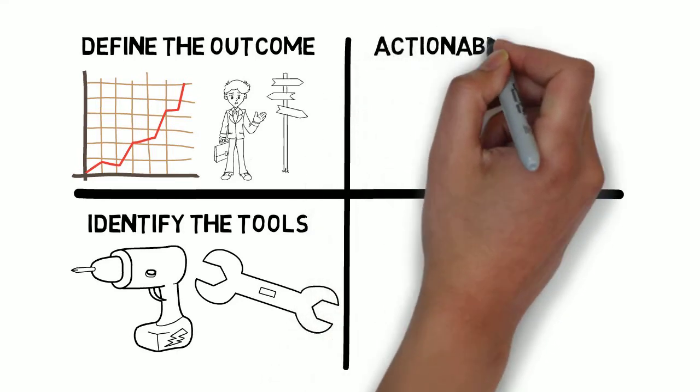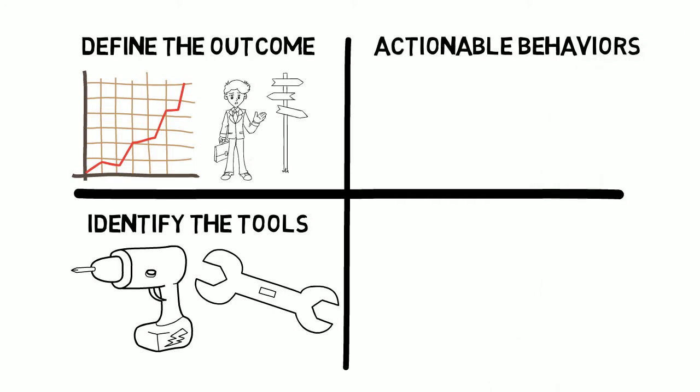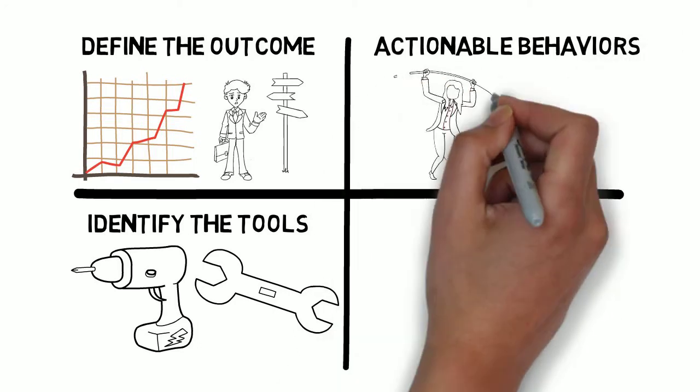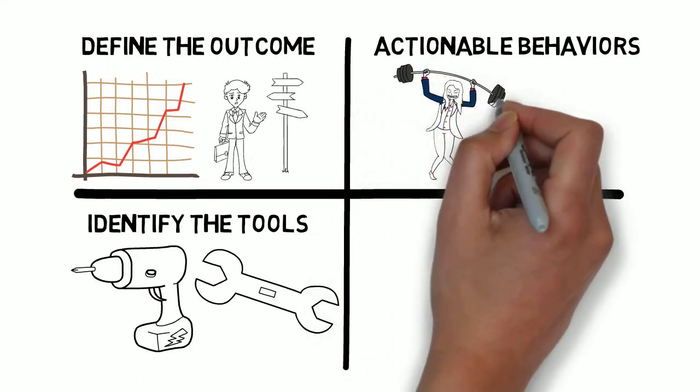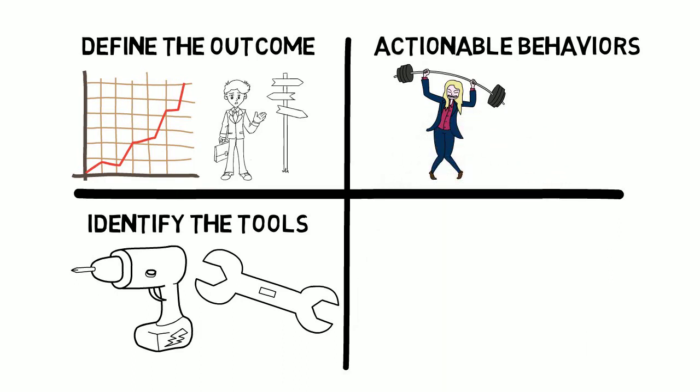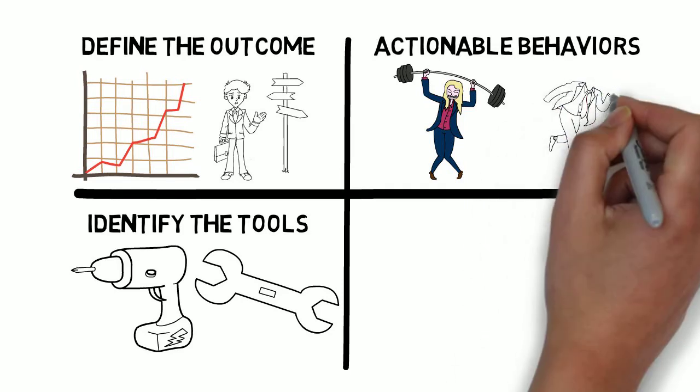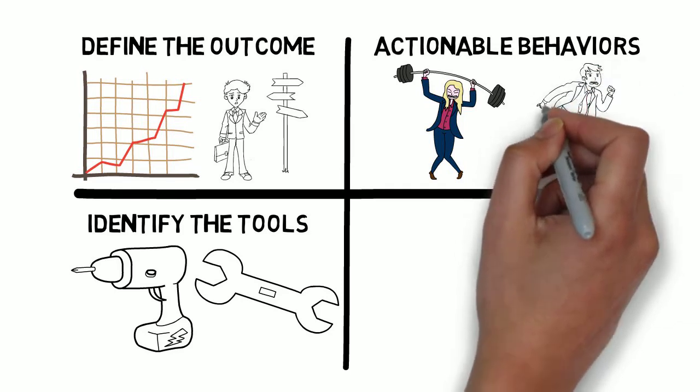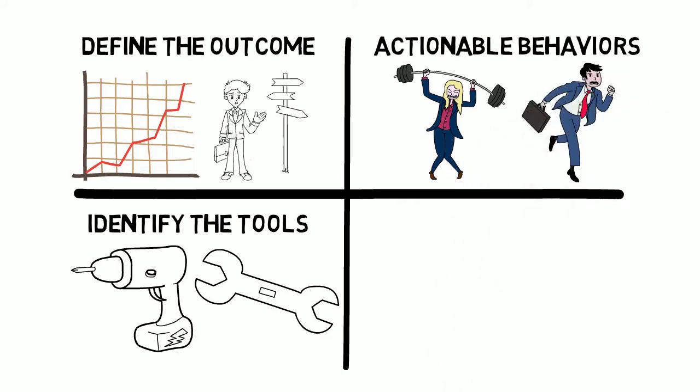Step three in this coaching plan is to define specific actionable behaviors. Once the outcome has been identified and every tool available has been identified, now it's time to identify specific things the employee can do to improve their performance. The behaviors that are defined here need to come from the employee as they should be an authentic representation of what the employee does and who they are. These behaviors should be actionable in a way that it is something that can be seen or heard by the leader, meaning that it is something that they are saying, something that they are doing.